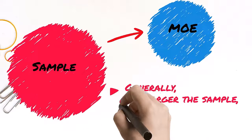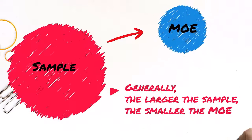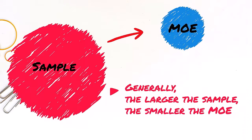Generally speaking, the larger the sample, the smaller the margin of error will be. The more data you have, the more confident you can be in an estimate. This is the reason that our first example has a relatively small margin of error compared to the estimate.